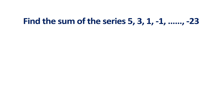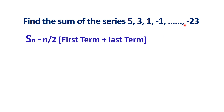Now let us solve another question: find the sum of the series 5, 3, 1, minus 1, ... up to minus 23. The first term and last term are given. We can apply the formula Sn equals n by 2 into first term plus last term. But we need to find n first, as it is not given.